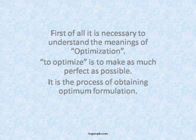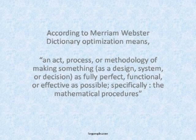First of all, it is necessary to understand the meanings of optimization. To optimize is to make as much perfect as possible. It is the process of obtaining optimum formulation. According to Merriam-Webster dictionary, optimization means an act, process, or methodology of making something — as a design, system, or decision — as fully perfect, functional, or effective as possible.